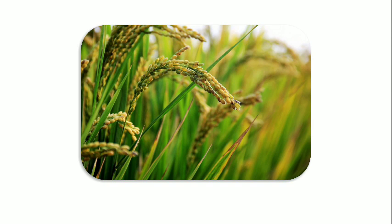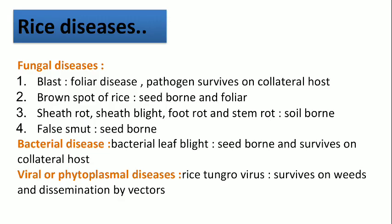In IPDM, a combination of practices are used. The first crop we'll discuss is rice. Let's see what different diseases attack rice. These are divided into three categories: first, fungal diseases; second, bacterial diseases; third, viral or phytoplasma diseases. For fungal diseases, there are around four categories. The first is blast, which is a foliar disease that attacks foliage and leaves, and in some cases also attacks the node and neck.